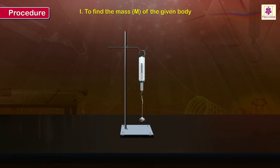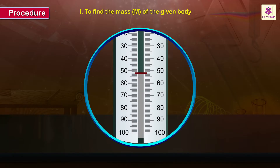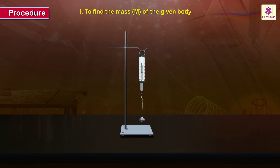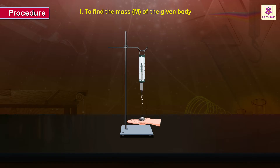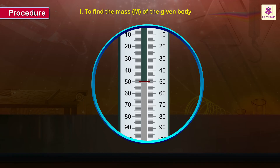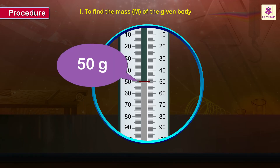Record the observed weight W1, which is equal to 52 grams, taking into consideration the least count (LC) of the balance. Support the suspended object on your palm so that its entire weight is not on the balance. Then slowly lower and remove your palm and record the weight W2, which is equal to 50 grams.